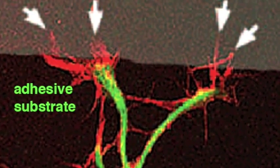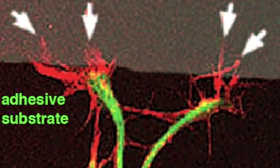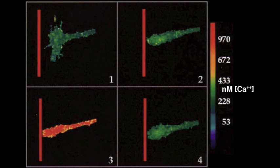Filopodia, shown in red, sample the CSPG surface, but microtubules in green never cross the border because adhesions are not made. In addition, CSPG induces growth cone calcium spikes seen in panel 3 that stop growth cone advance.